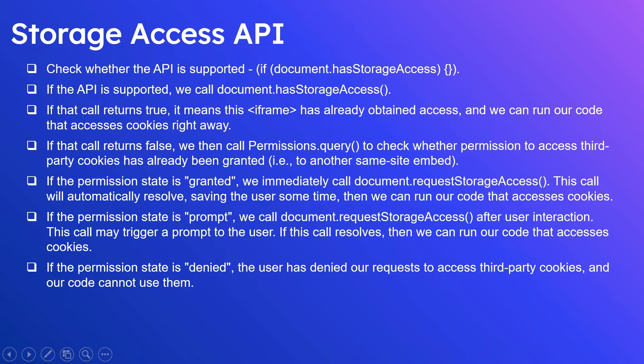If the call returns false, we then call permission.query for storage-access to check if the permission to access third-party cookies has already been granted — for example to another same-site embed. If the permission state is 'granted', we can immediately call document.requestStorageAccess, and this call directly gives permission to access the cookies.